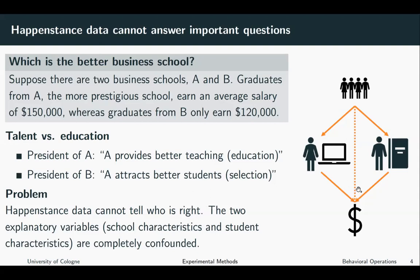I try to illustrate this in a picture. Business school A has a certain type of students and a certain type of education, and so does business school B. We know that graduates of A are in the end more successful and reach higher salaries, but we do not know if this is because they are better students or because the education the business school provides is better. So with just happenstance data, we have a problem. What we need to do is distinguish the impact of the schools from the student characteristics, and this is why we often need to run experiments — where we can control the different impact factors and distinguish between causality and correlation.